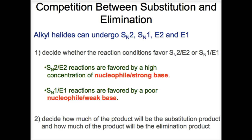Alkyl halides can undergo four possible types of reactions: SN1, SN2, E2, and E1. Our goal is to predict the products of the reaction of a given alkyl halide with a given nucleophile or base. First, decide whether conditions favor SN2/E2 or SN1/E1. SN2 and E2 are favored by a high concentration of a strong nucleophile or base, while SN1 and E1 are favored by a poor nucleophile or weak base. Second, decide how much product will be substitution versus elimination — relative amounts depend on whether the alkyl halide is primary, secondary, or tertiary, and on the nature of the nucleophile or base.